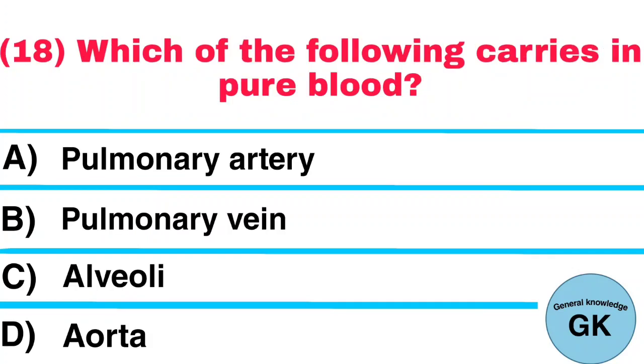Question number 18. Which of the following carries in pure blood? A. Pulmonary artery. B. Pulmonary vein. C. Alveoli. D. Aorta. Answer: Pulmonary artery.